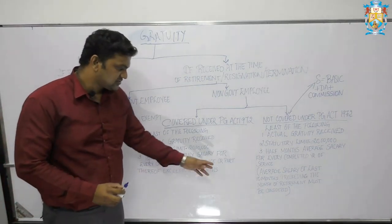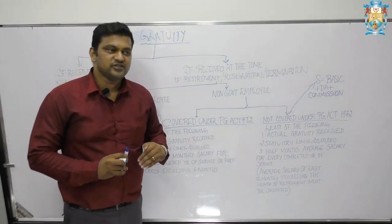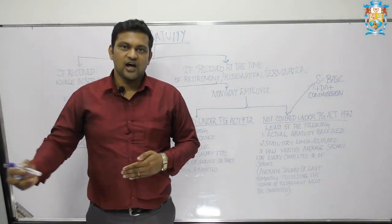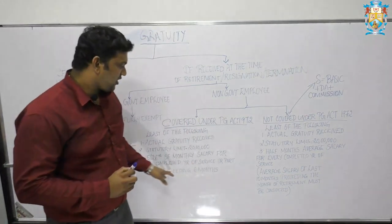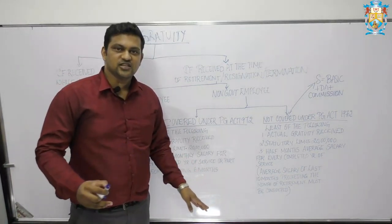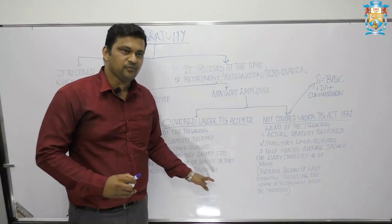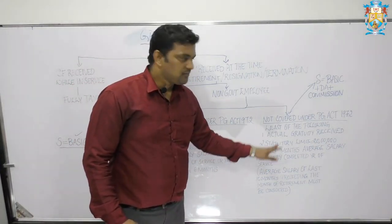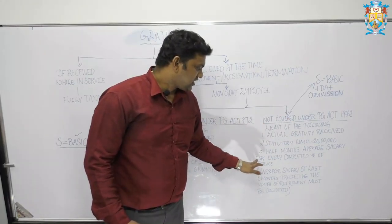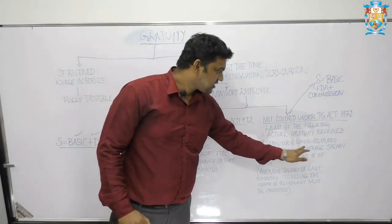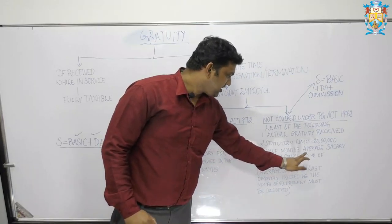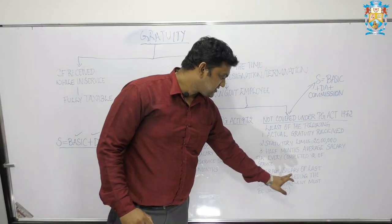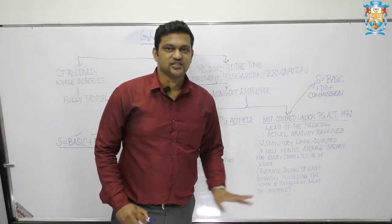This means if the service is three years, six months and 12 days, it will be rounded off to the next full year — that is four years. Whereas for not covered under the Payment of Gratuity Act, the third condition is half month average salary for every completed year of service, and average salary of the last 10 months preceding the month of retirement is to be considered.